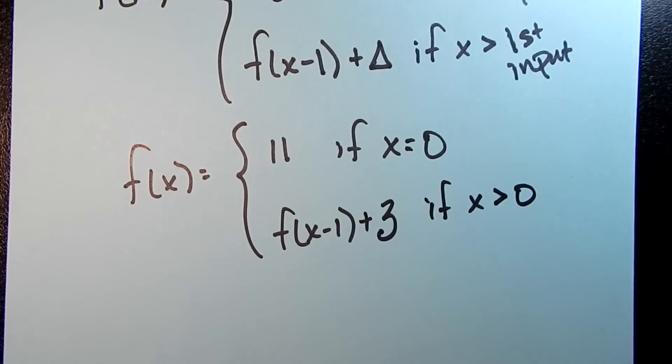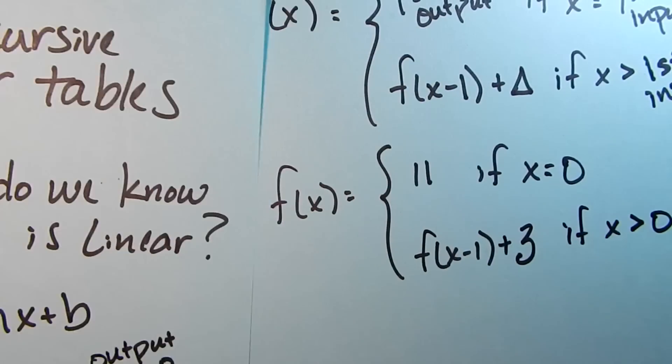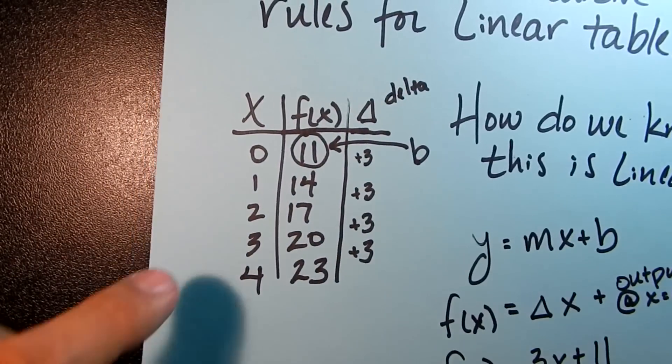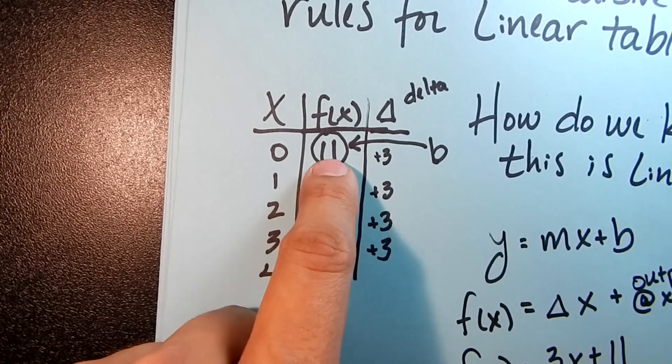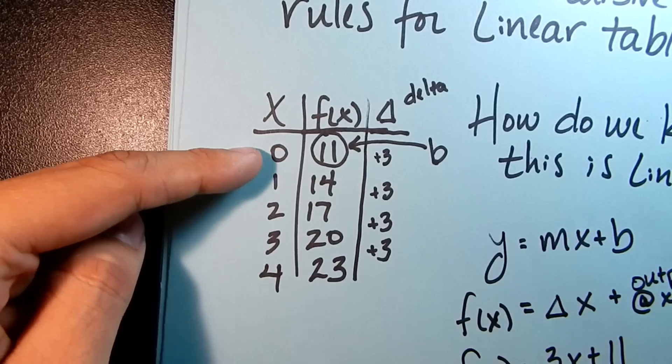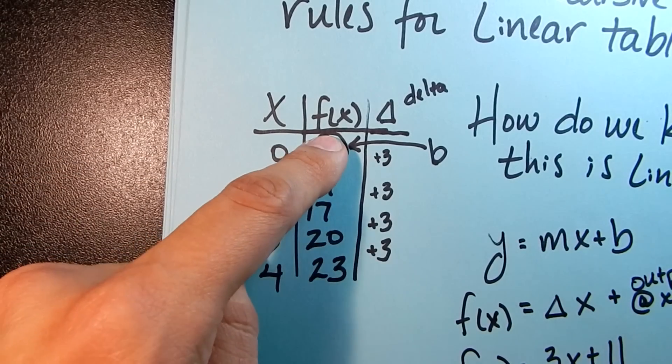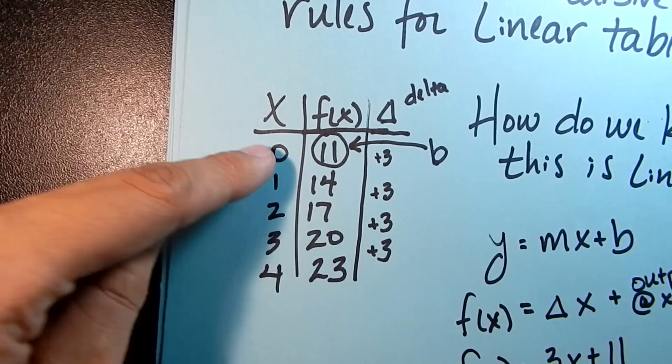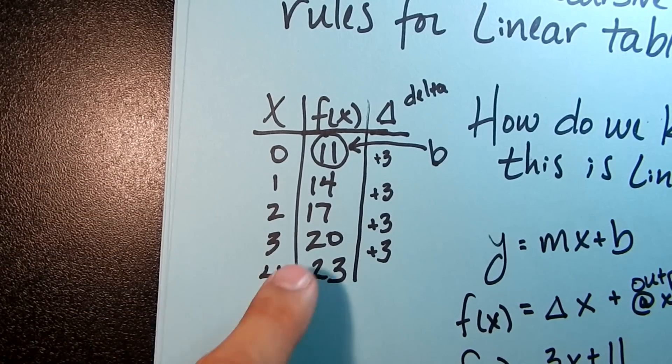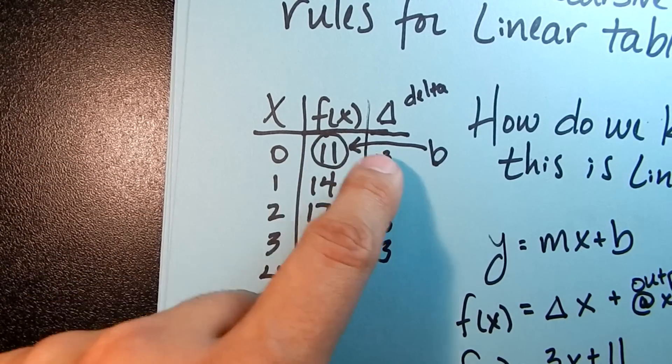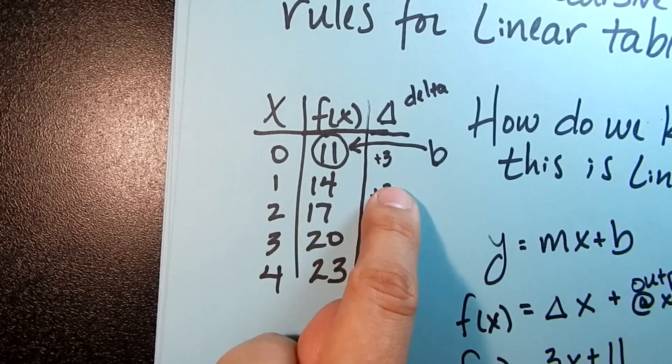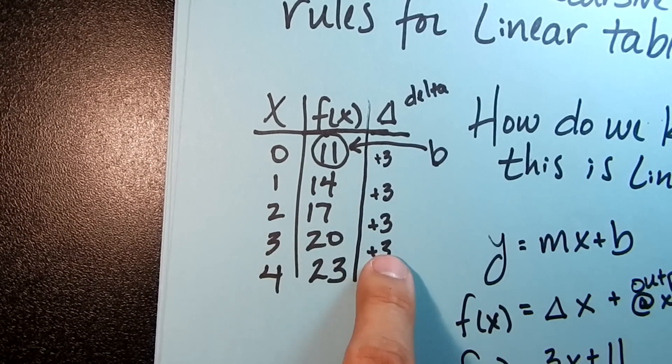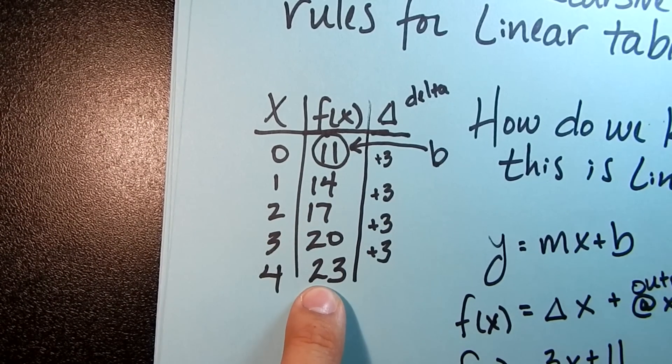So on our table, we had... So the first line of that recursive rule sort of starts our function here. It says it's this, if x is that. And then for all x is bigger than this, take the previous output and add delta. So 14 plus 3, 17 plus 3, 20 plus 3 to get the next one. So that's how that works.